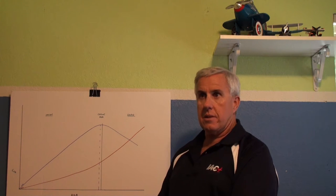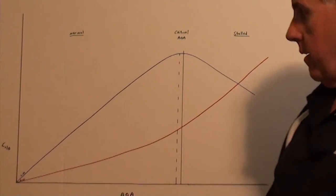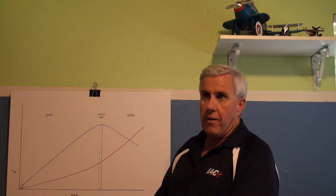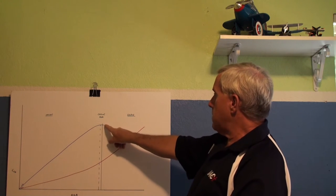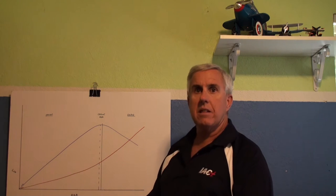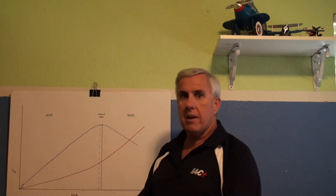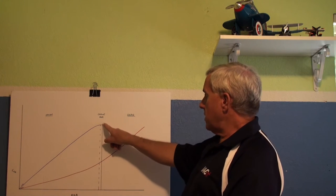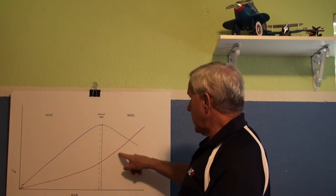Let's look at what happens as the angle of attack increases. On this graph, the vertical axis shows the coefficient of lift and drag, and the horizontal axis shows increasing angle of attack. As angle of attack increases, the blue line — lift — increases to a maximum point, then starts to decrease. The red line — drag — keeps increasing continuously.